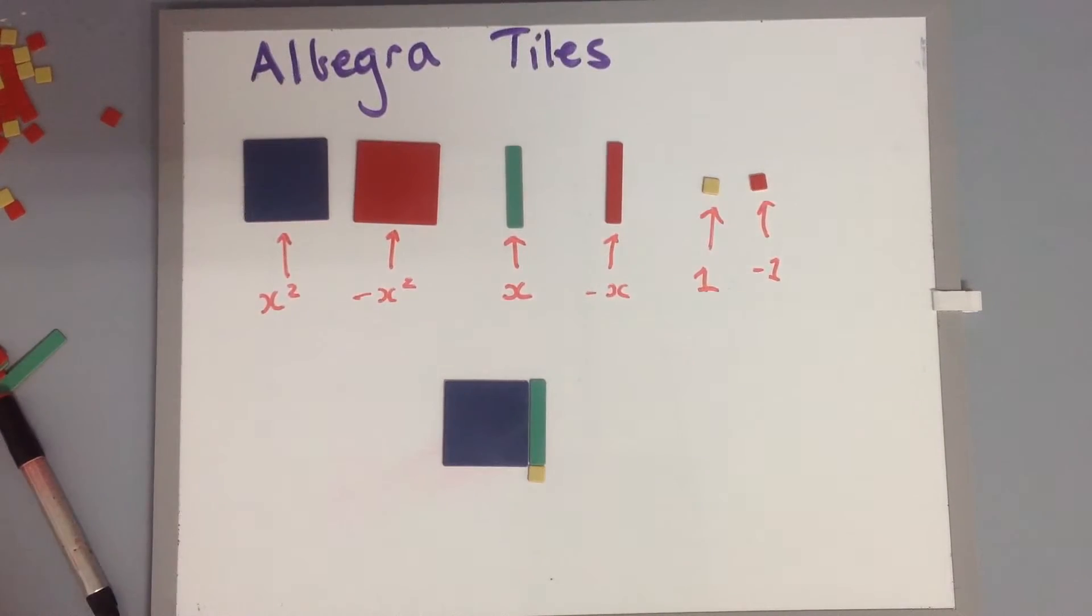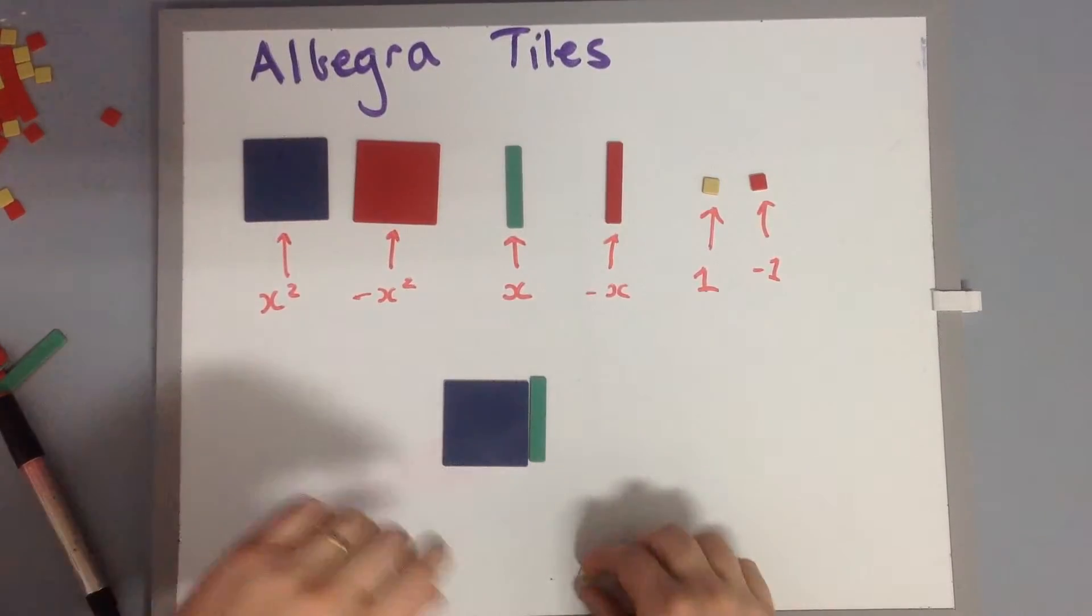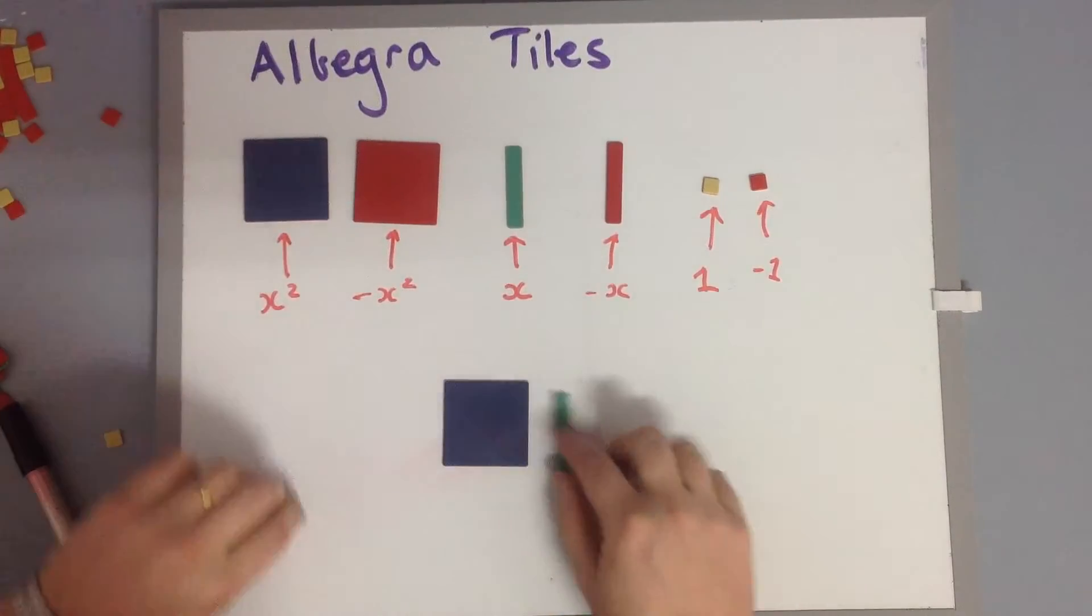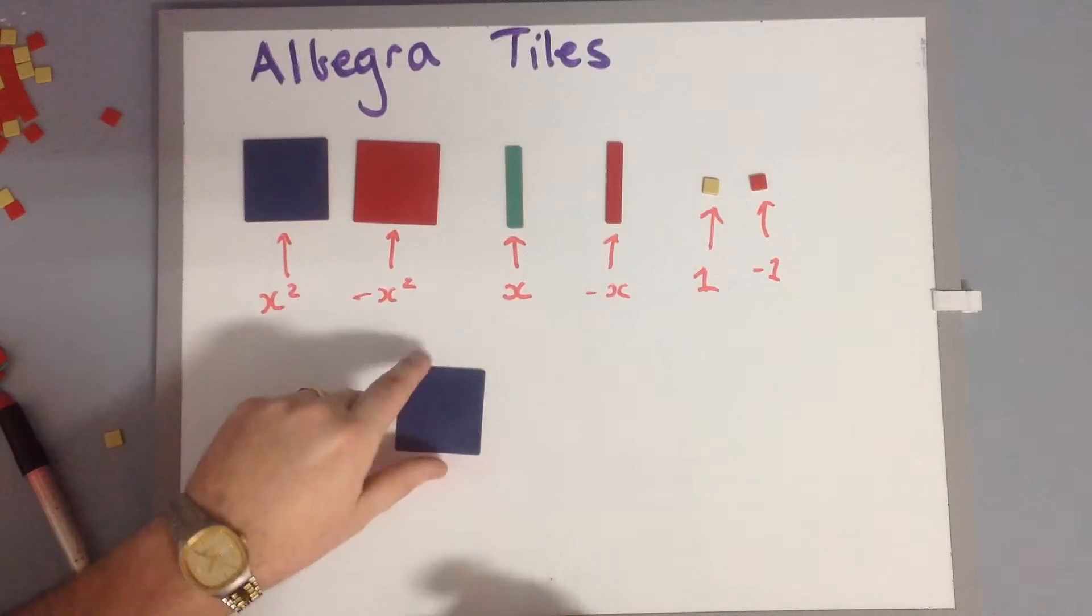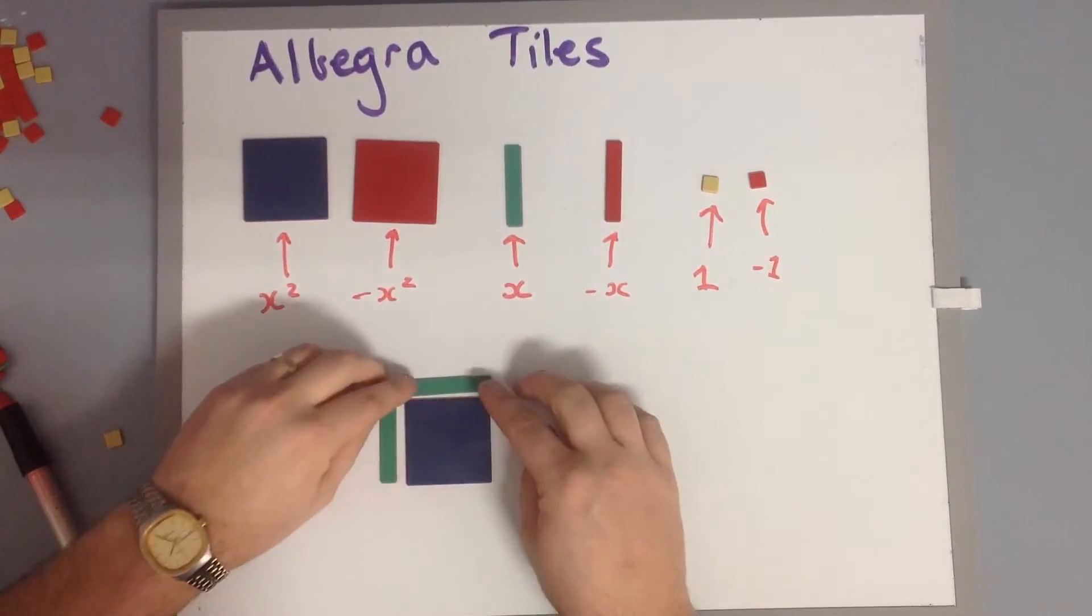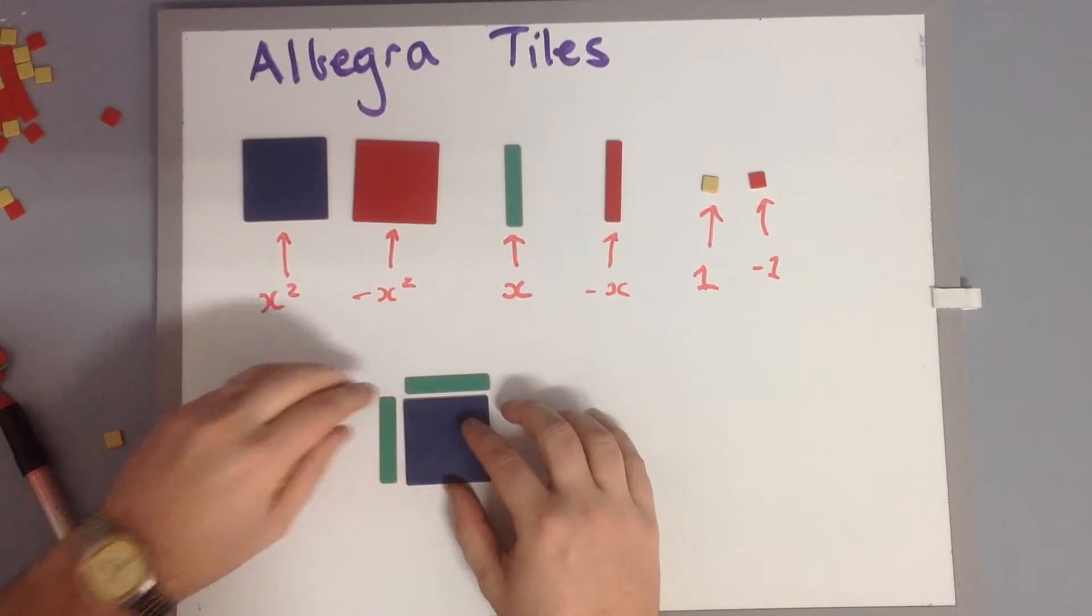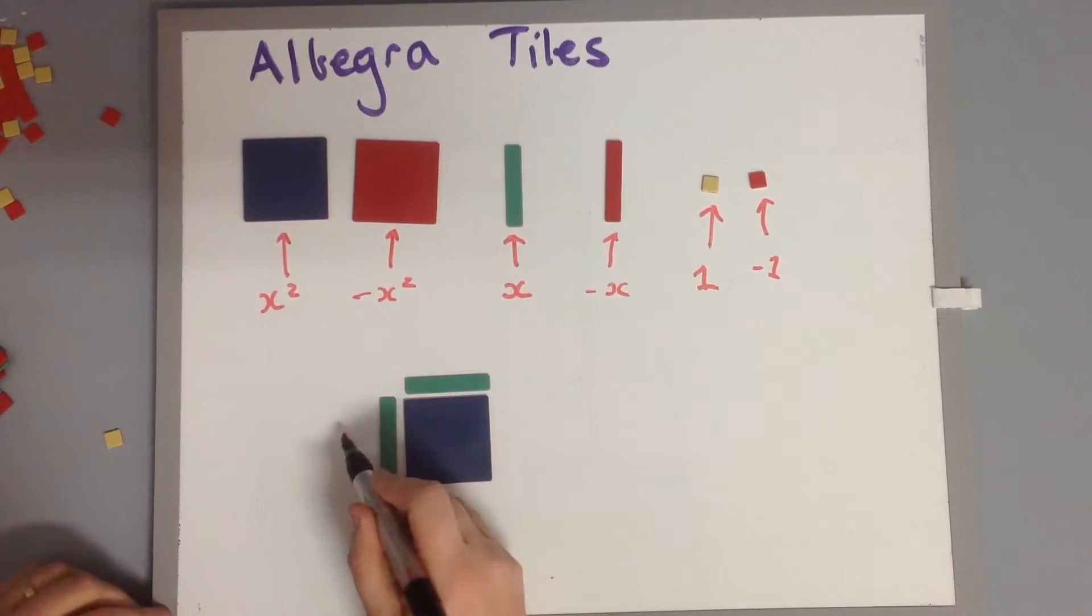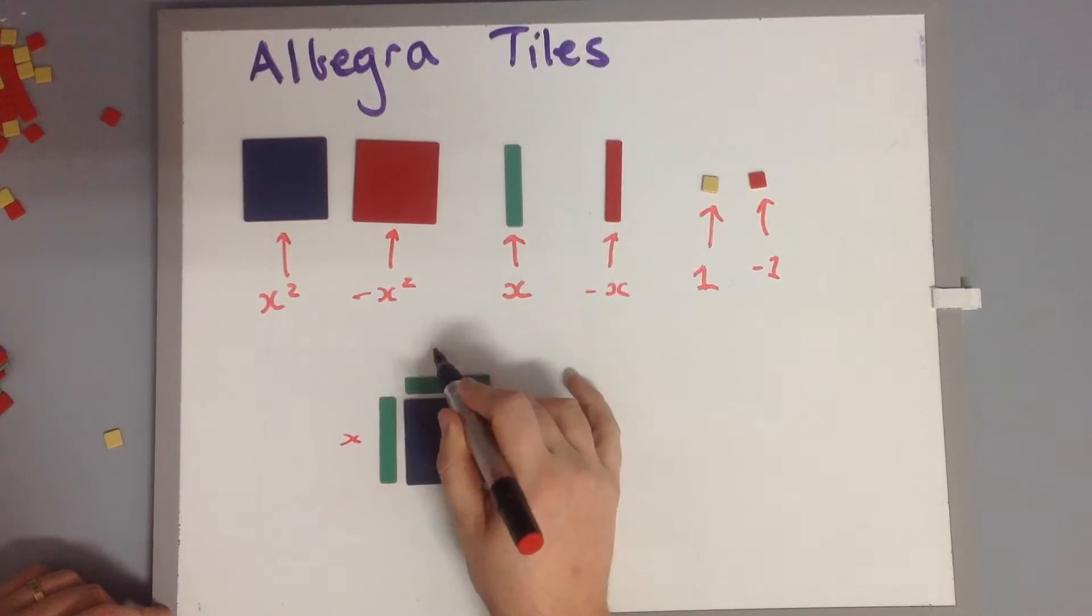Using our algebra tiles, for example, what this means is for our x squared, both these sides are x. We can think of it like this and match up, so we've got our x and our x.